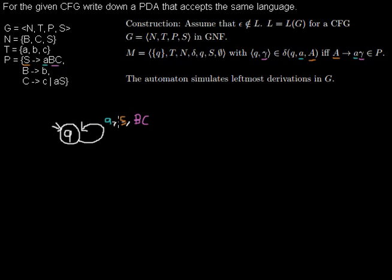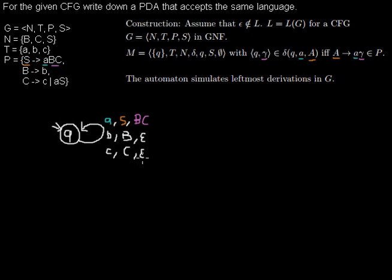We have to do the same as we did for the S rule for every other rule as well. Next, the non-terminal B expands to the terminal B, so we want to read terminal B and read non-terminal B from the stack. Because there are no other non-terminals following that terminal, we don't push anything to the stack. For the C rule it's the same: we read terminal C, read non-terminal C from the stack, and don't push anything onto the stack.